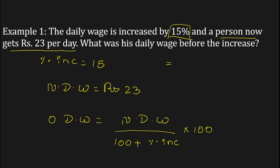Here, new daily wage is 23 rupees upon 100 plus... Plus in the denominator because the original daily wage is increased by 15%.